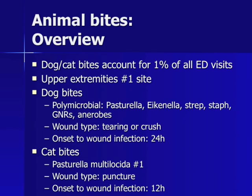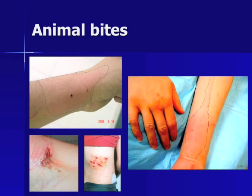Dog and cat bites account for about 1% of all ED visits, with the upper extremities being the number one site. Dog bites often cause polymicrobial infections from bacteria such as Pasteurella, Eikenella, Streptococcus, Staphylococcus, gram-negative rods, and anaerobes, with a tearing or crush wound type and 24-hour median onset to infection. Cat bites are usually monomicrobial caused by Pasteurella multocida, present as puncture wounds, and have onset to infection as little as 12 hours. Images demonstrate the puncture wounds and erythema of cat bites, and the tearing or crush lacerations of dog bites.